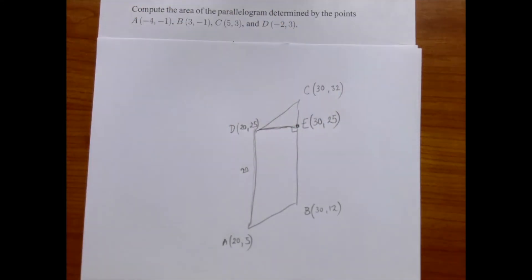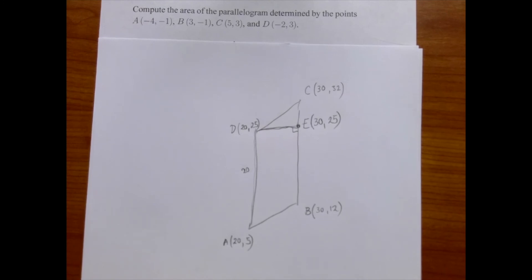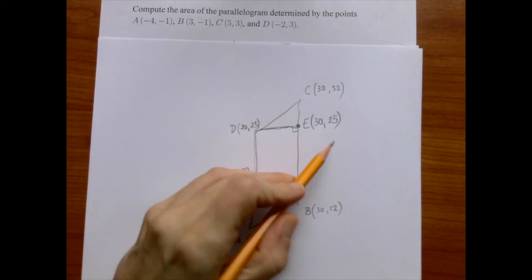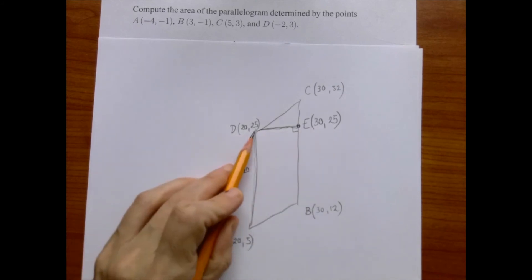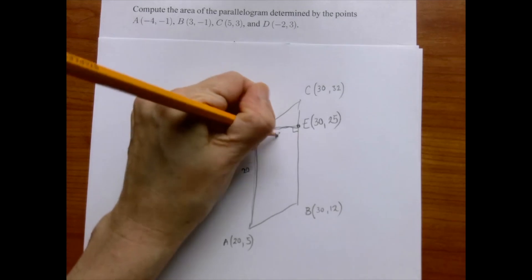And given this point, we can easily find all the lengths that we need at this point. For instance, between D and E. Twenty-five is the y-coordinate for both, this is why it's horizontal. So the difference between the x-coordinates, we have to climb from twenty to thirty, so this side is ten long.